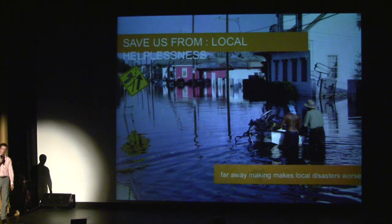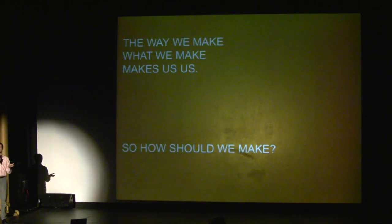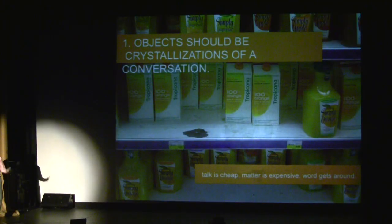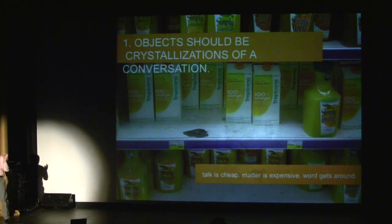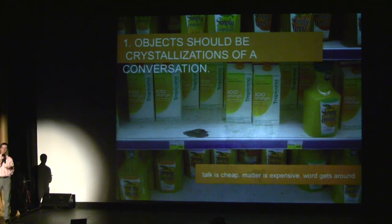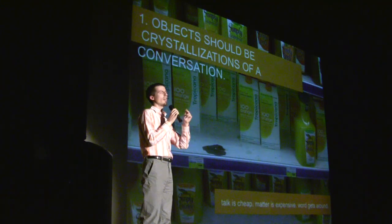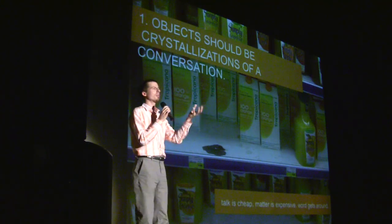So how are we going to make the things that will make us free? I think there are seven ways to do it, and I'm calling them humblefacture — all in one giant, loving hug. The first thing is that objects have to be crystallizations of a conversation. It's really important that when you make something, it comes from your users.